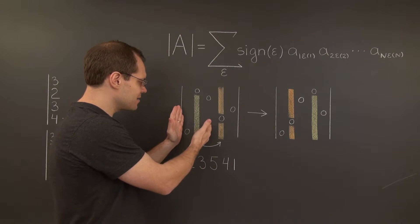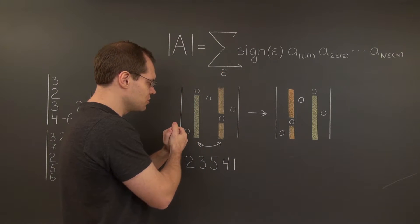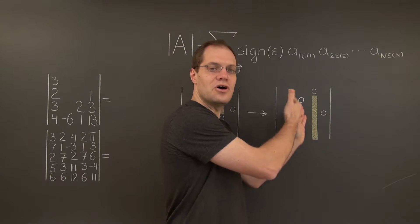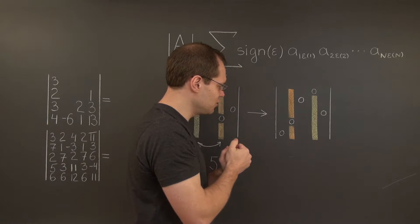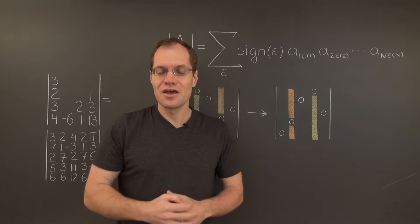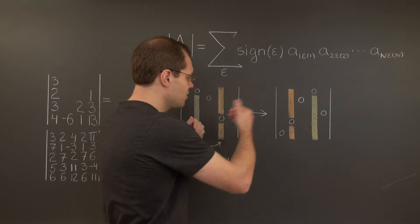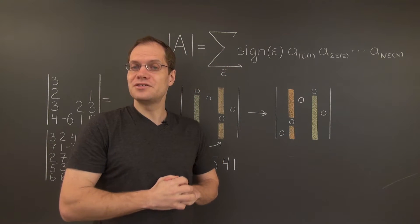but the way the entries of the matrix are combined into terms is the same. That's because if this pattern had exactly one entry in each row and one in each column, then the switched pattern will also have exactly one entry in each row and one in each column. So the collections of terms are the same for both matrices, for both determinants.